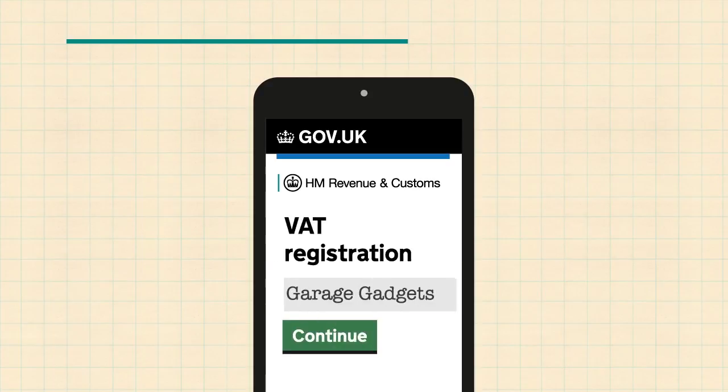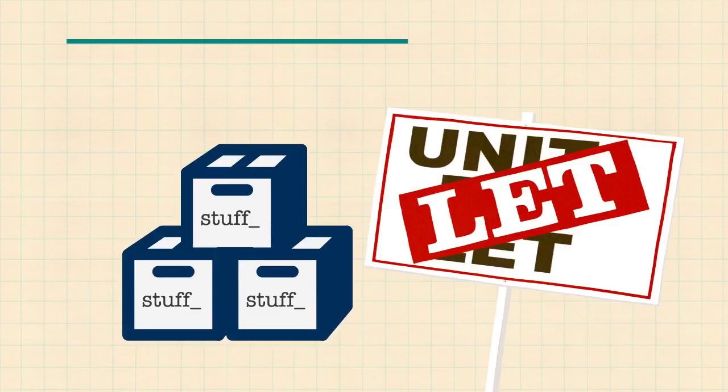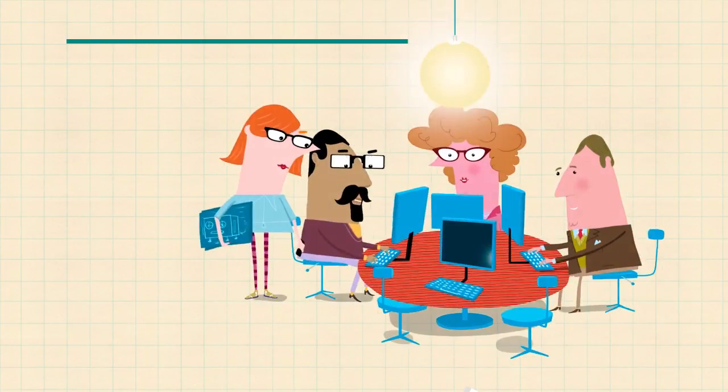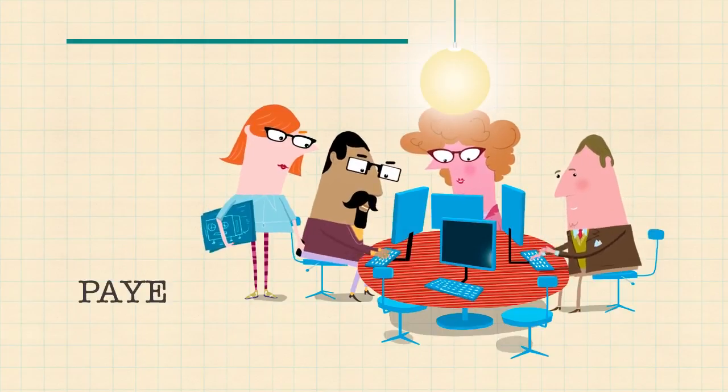The business grows and registers for VAT. It moves out of the garage and rents an office. It registers for corporation tax. Then the company starts employing people and has to think about PAYE and the national minimum wage.